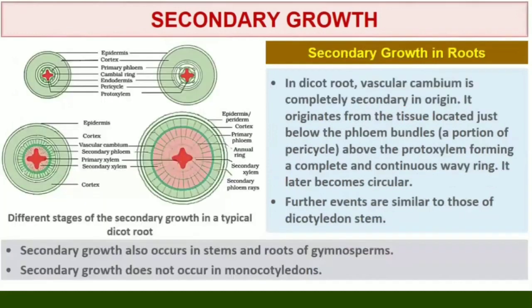These occur in most woody trees. Secondary growth in roots: In the dicot root, the vascular cambium is completely secondary in origin. It originates from the tissue located just below the phloem bundles and a portion of pericycle tissue above the protoxylem, forming a complete and continuous wavy ring which later becomes circular. Further events are similar to those already described for a dicotyledon stem. Secondary growth also occurs in stems and roots of gymnosperms. However, secondary growth does not occur in monocotyledons.